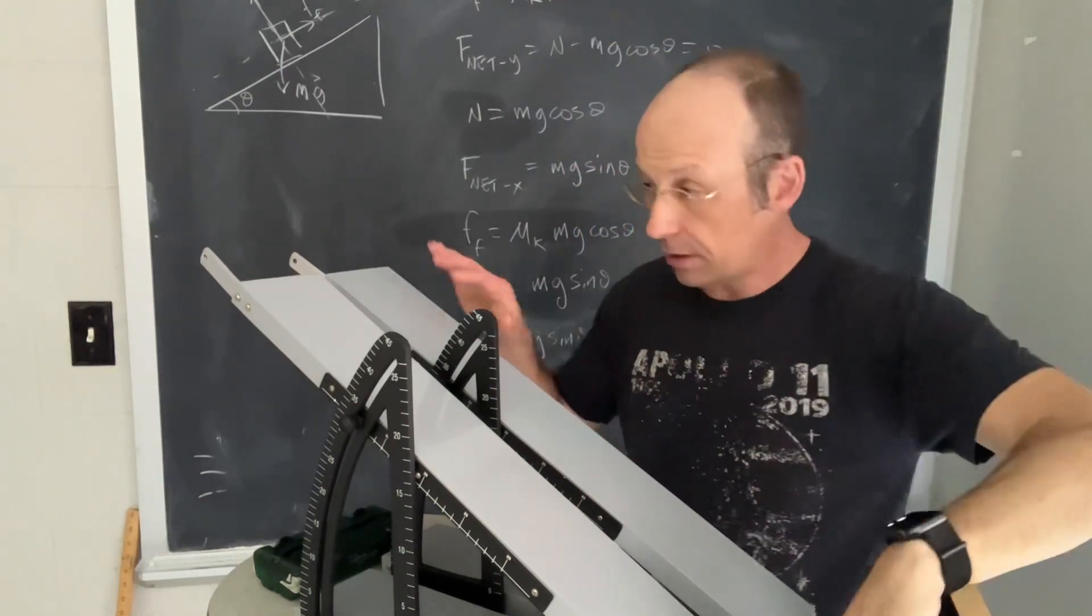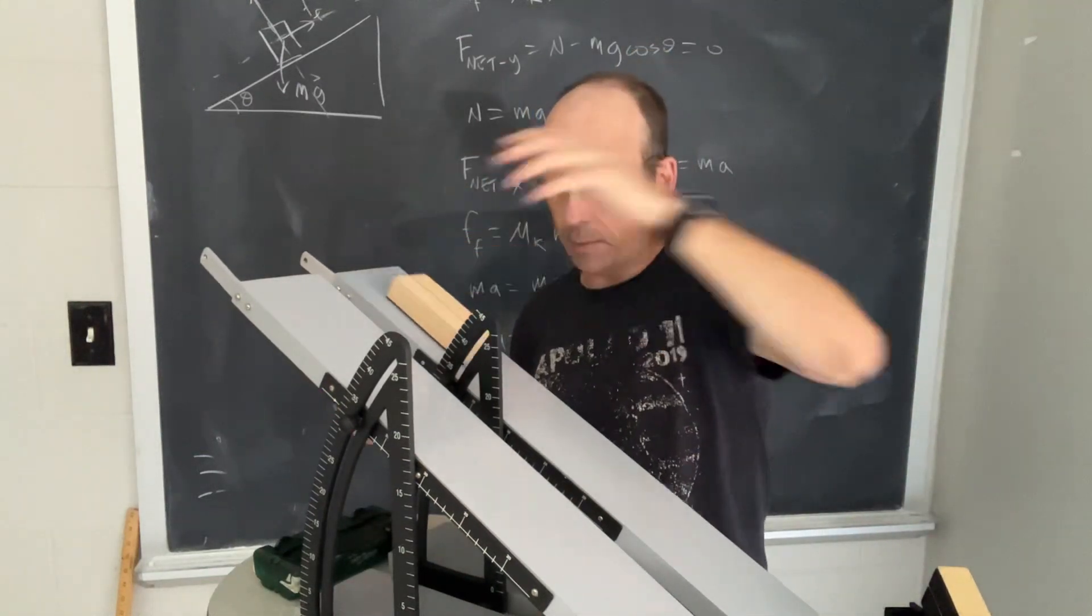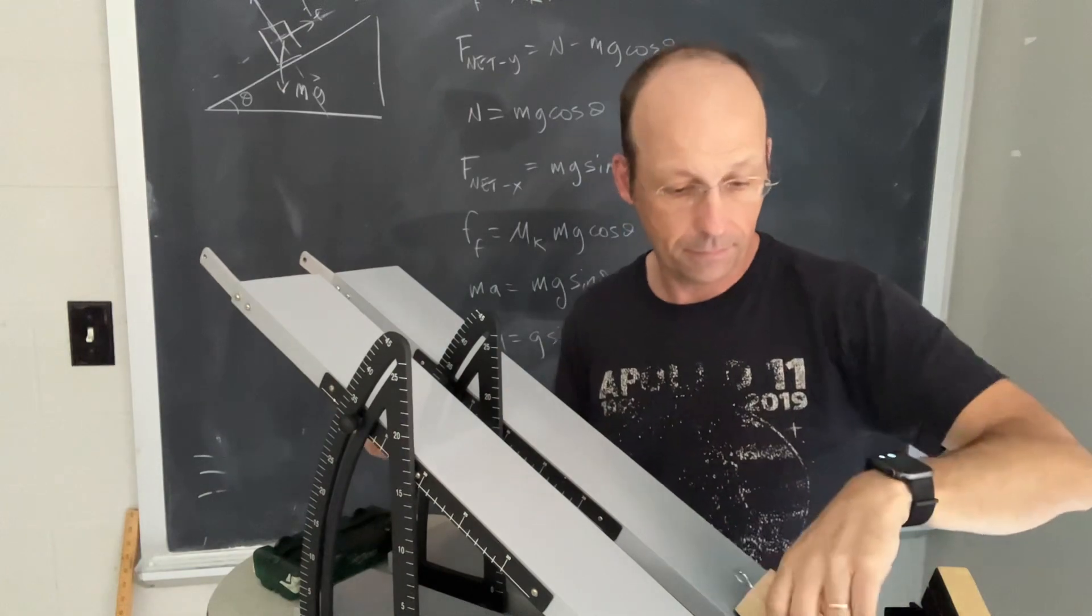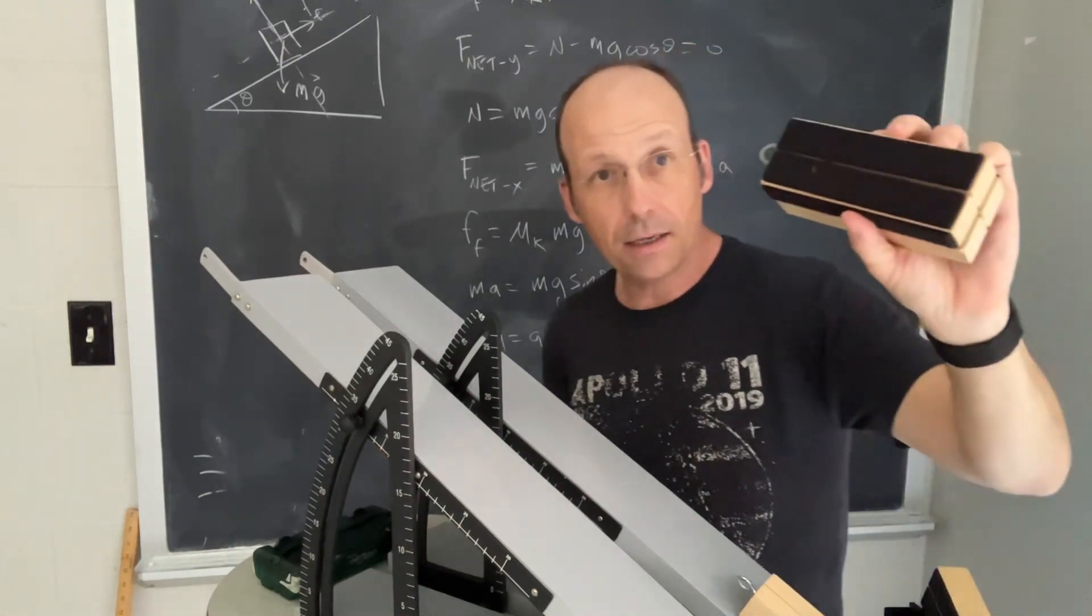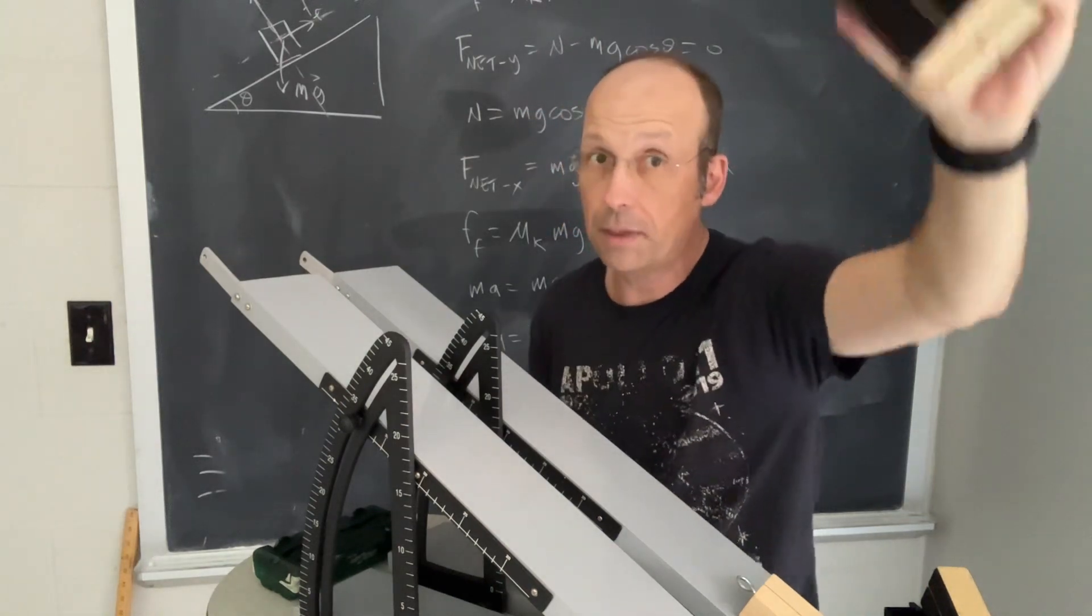So I have here a slide, and I have a block with felt on the bottom, and this will be my child. This block has the same felt, but it's two blocks, so it's twice the mass. So this would be like a cop.